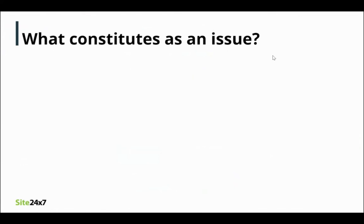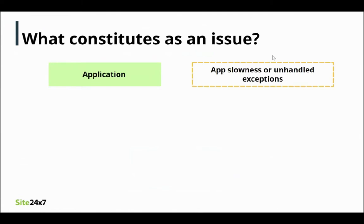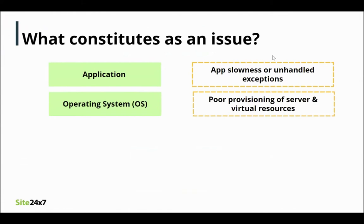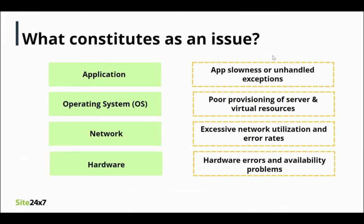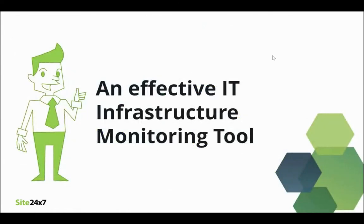What exactly constitutes an issue in an IT environment? Going by the IT tech order, some of the major issues that IT admins face are application problems like slowness or unhandled exceptions, poor provisioning of server resources like CPU and memory, misallocation of virtual resources like hosts, virtual machines, and network, excessive network utilization and error rates, hardware errors, and availability problems. This is where an effective IT infrastructure monitoring tool comes in handy.